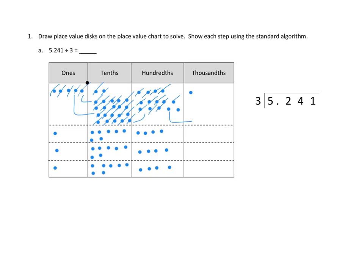We're going to decompose those two remaining hundredths into twenty thousandths. Now we've decomposed those two hundredths and can move to our next smaller unit, which is thousandths. We've got twenty-one thousandths total, and we've got some good news: twenty-one can divide evenly across three groups — seven in each group.